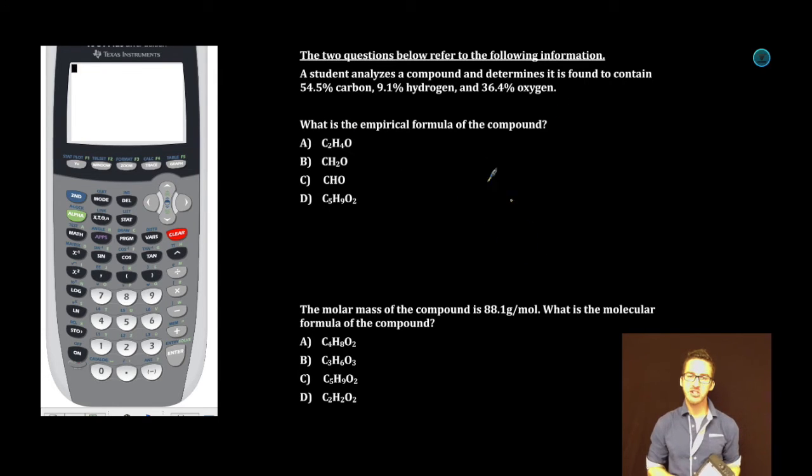First thing we're asked to determine: what is the empirical formula of the compound? Remember, empirical formula means the smallest whole number ratio of moles. Let's do this. Assume 100 grams.